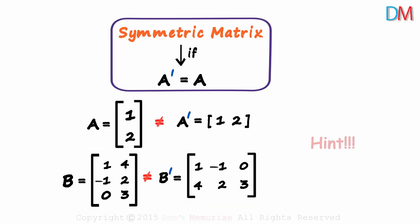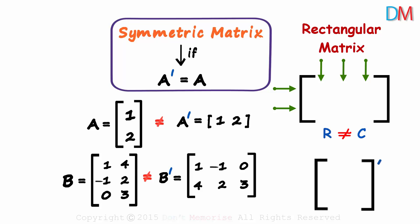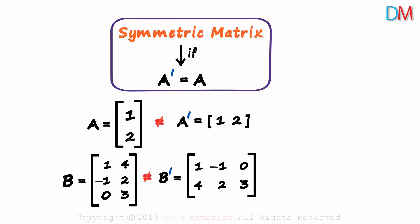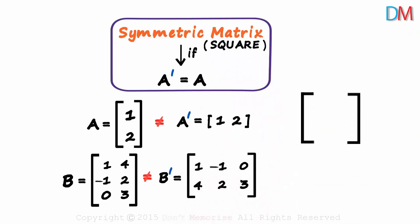This should give us a hint. Can a rectangular matrix ever be symmetric? A rectangular matrix is a matrix in which the number of rows is not equal to the number of columns. It can never be symmetric, because the order of the transpose will definitely be different from that of the matrix. Only a square matrix can be symmetric — a square matrix is one in which the number of rows is equal to the number of columns.